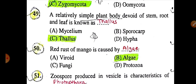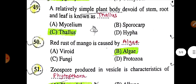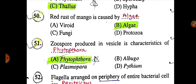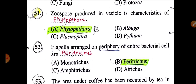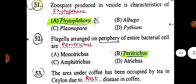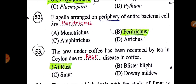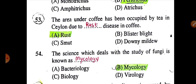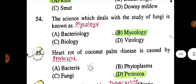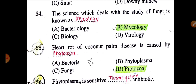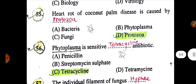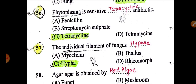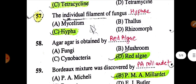A relatively simple plant body devoid of stem, root, and leaf is known as a thallus. Red rust of mango is caused by algae. Zoospores produced in vesicles is characteristic of Phytophthora. Flagella arranged around the periphery of the entire bacterial cell is called peritrichous. The area of coffee has been occupied by tea in Ceylon due to rust disease of coffee. The science which deals with the study of fungi is known as mycology.